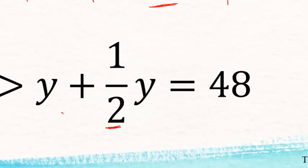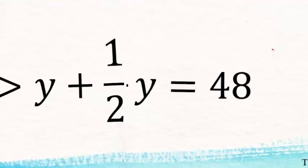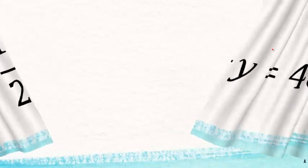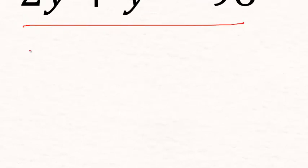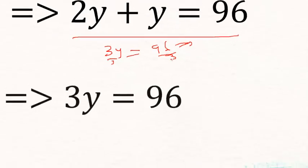The next thing to do is multiply through by 2. So we multiply by 2, by 2, and by 2. Now we have y plus y, which means 2y equals 96. Two y plus y gives us 3y.